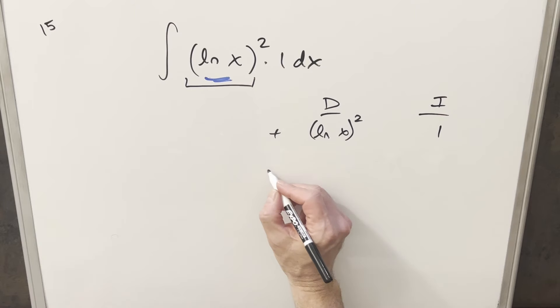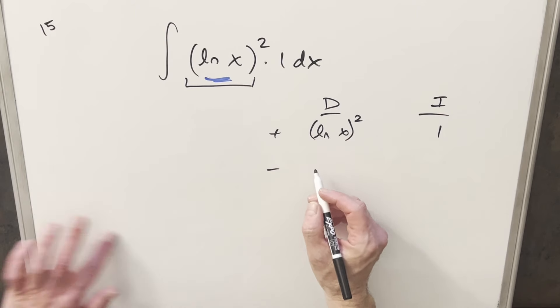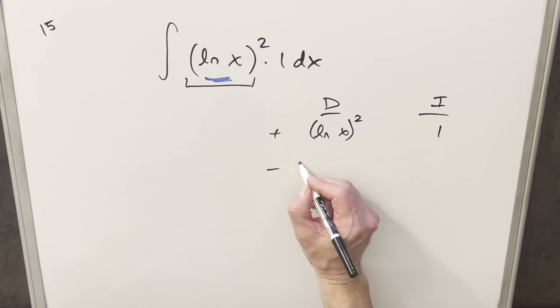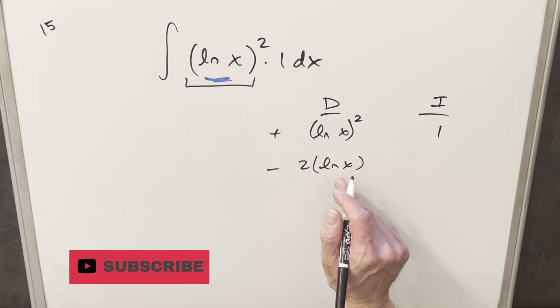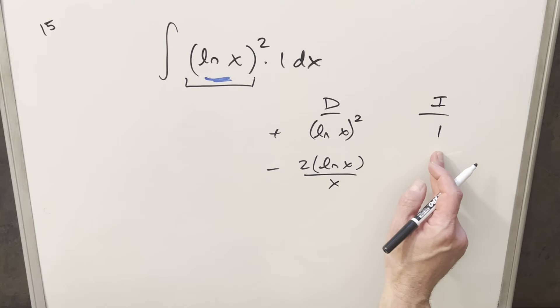Then we'll go ahead and differentiate. First we're going to use the power rule on this. So we'll bring the 2 out front here. We'll have 2 natural log x, but then we'll use the chain rule. Derivative of ln x is going to be 1 over x. And then we'll go over here, I'll just integrate 1. The integral of 1 is just x.